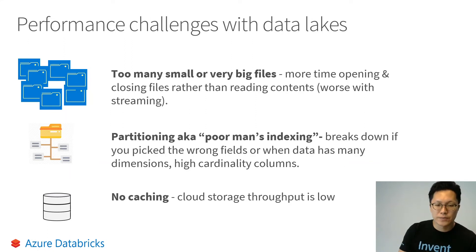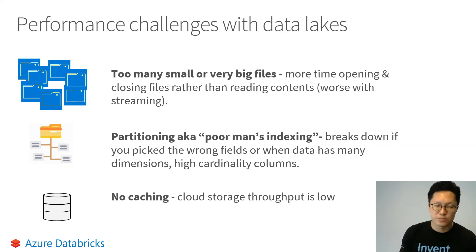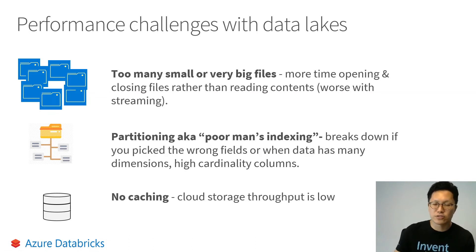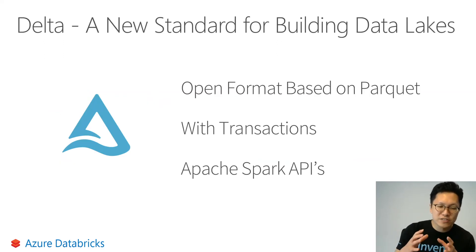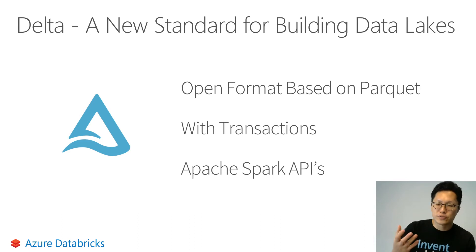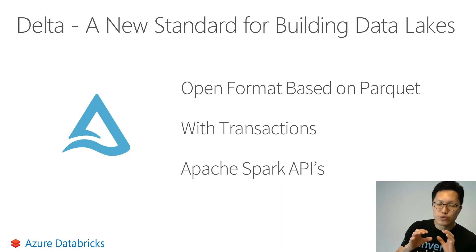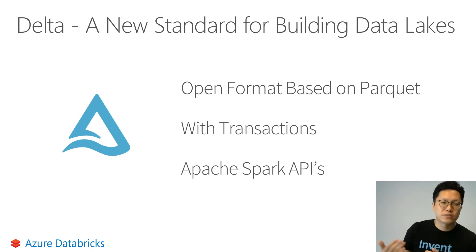The second challenge is performance — the small file problem has troubled data lake engineers for years, along with partition and load caching issues. Delta Lake is a new standard for building data lakes: it has an open format based on Parquet, ACID transaction control so you no longer need to worry about interrupted ETL jobs — it's either done or reverts to original status — and full Apache Spark API compatibility.